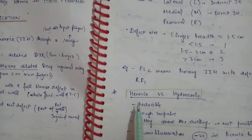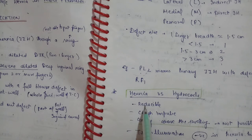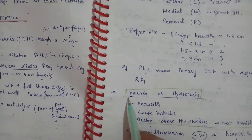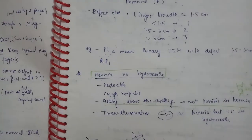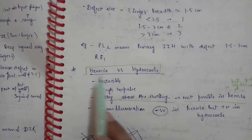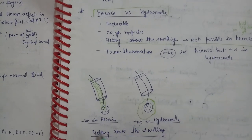The differences between hernia and hydrocele: hernia is reducible, and you cannot get above the swelling. In hydrocele, you can get above the swelling. Transillumination is positive in hydrocele and negative in hernia.